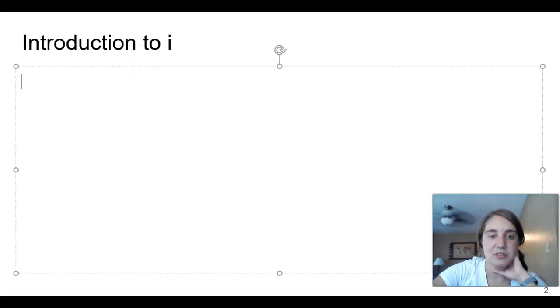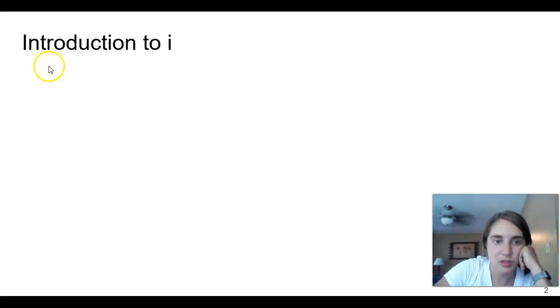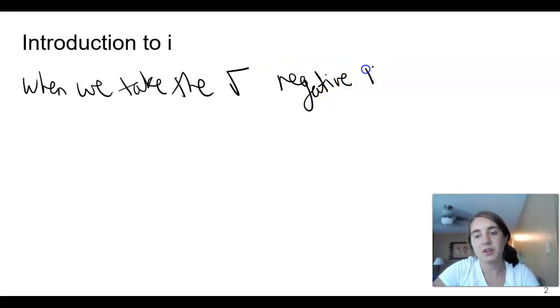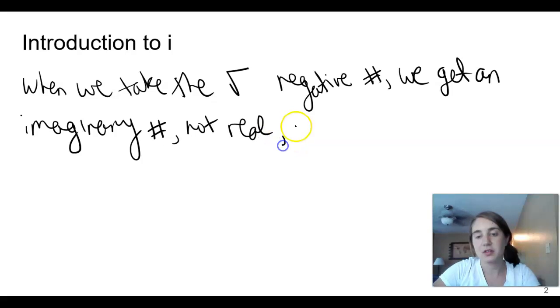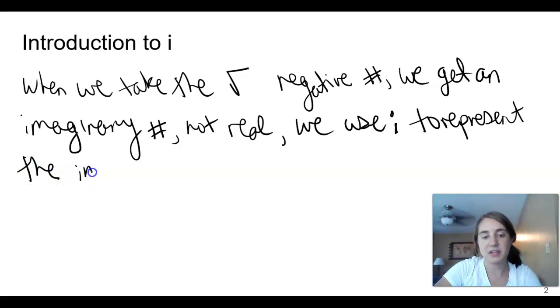So you're going to want to take notes along with us. We cannot take the square root... When we take the square root of a negative number, we get an imaginary number. So it's not real. We use i to represent the imaginary number.